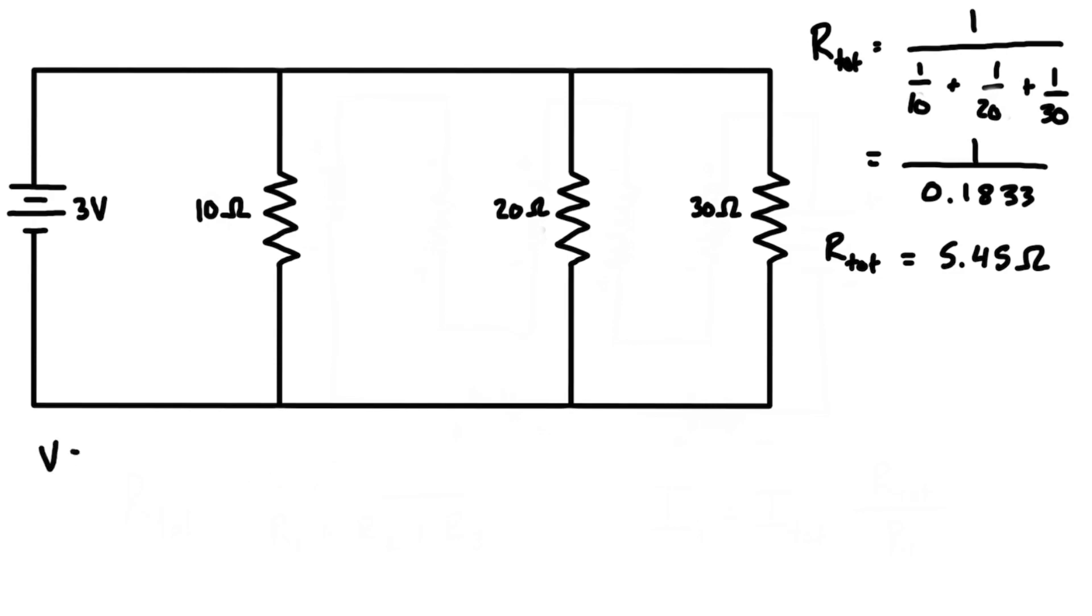Then we can apply Ohm's law. We have V equals IR and we can rearrange so we have I equals V over R. In this case, we're looking at I_total and R_total. The voltage drop from this side to this side is going to be 3 volts, so we can put that in.